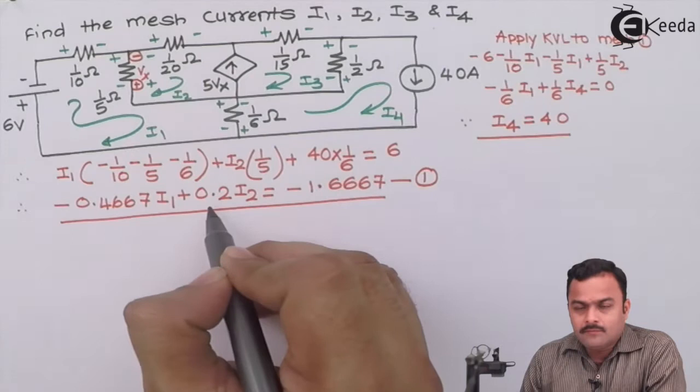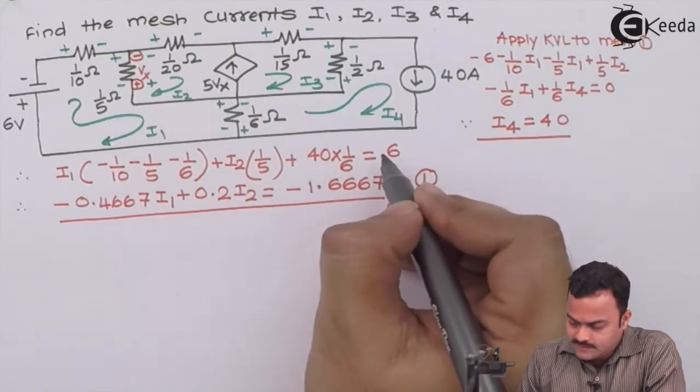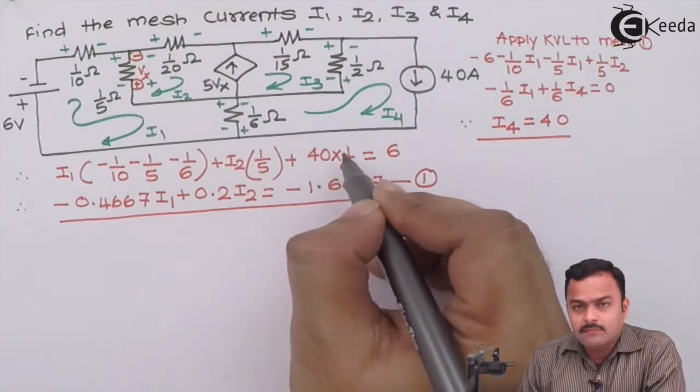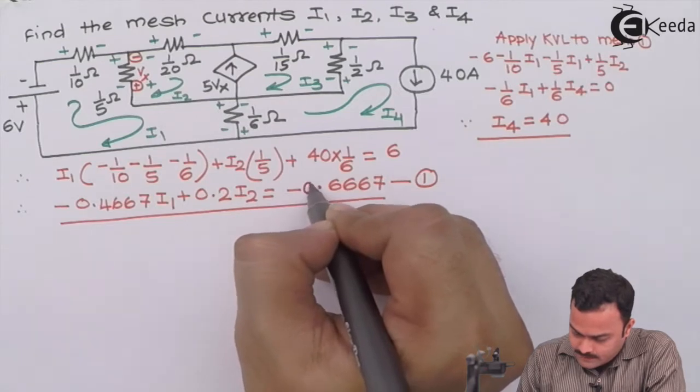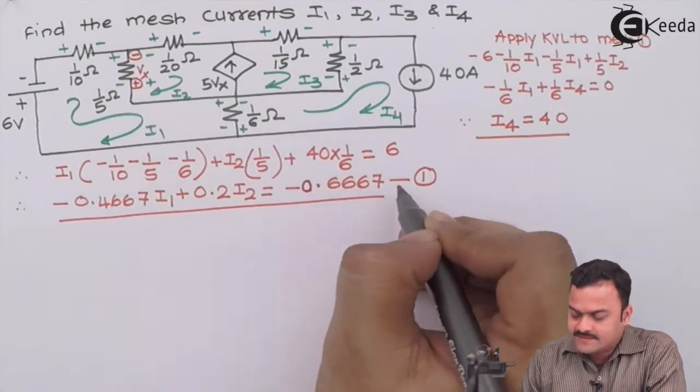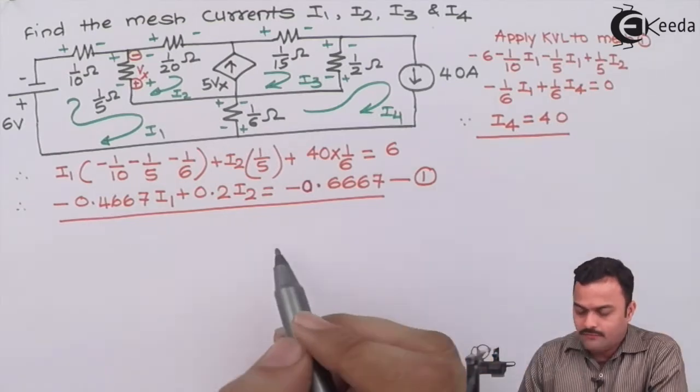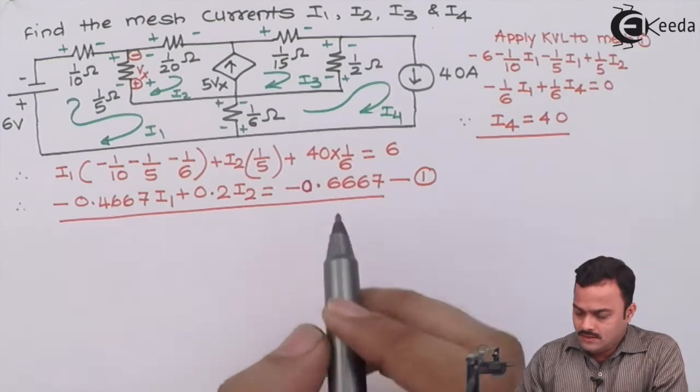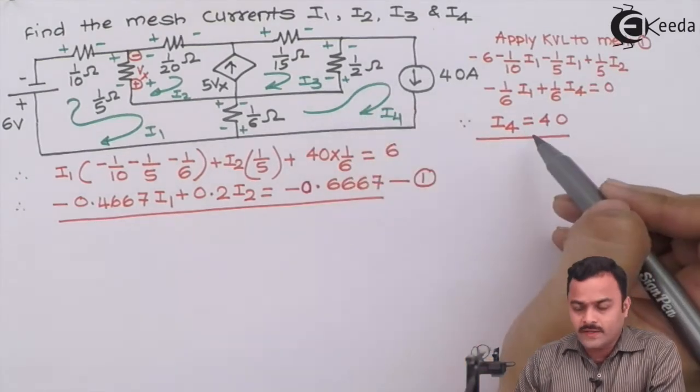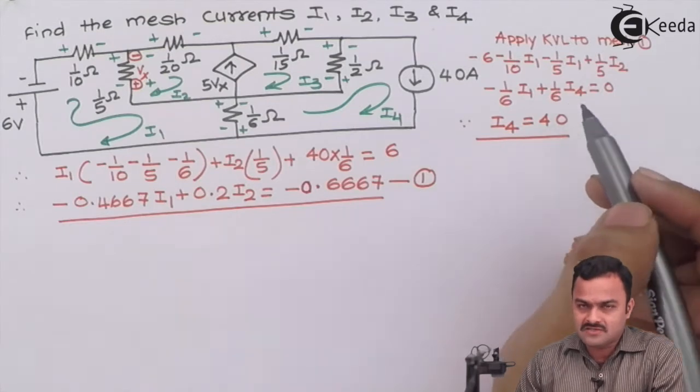After simplifying I will get an equation as minus 0.4667 i1 plus 0.2 i2 equal to minus 0.6667. And remember we need three equations, the fourth equation we have treated as a variable so that instead of four this time we'll have three equations only.